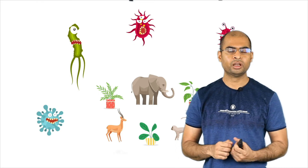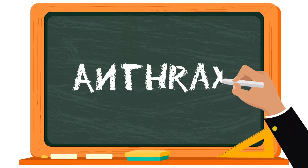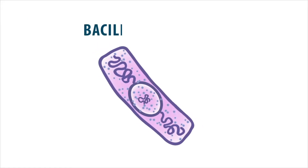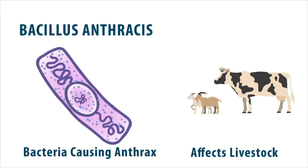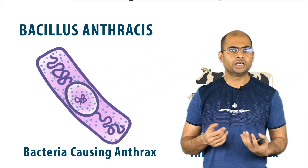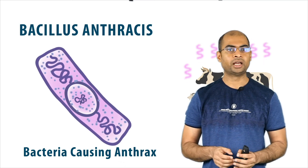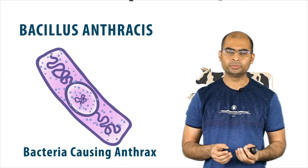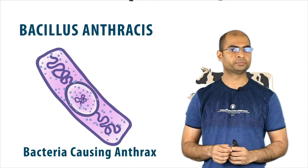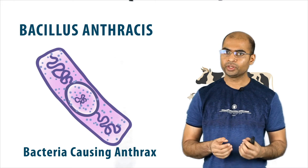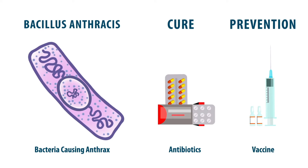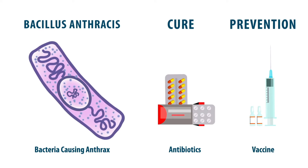Starting with animals. One such example is a disease called anthrax, caused by a bacterium called Bacillus anthracis. It mainly affects livestock like cattle and sheep. The tricky problem with anthrax is that the animal might not show many symptoms, but then turn very serious very quickly. But if identified in time, it can be cured with antibiotic medicines, and there are also vaccines available to prevent the spread of this disease.